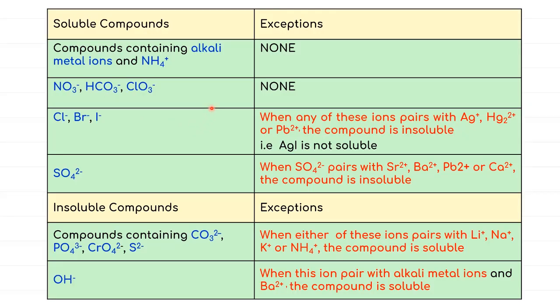This table shows the solubility rules for ionic compounds. For the first two cases of soluble compounds, there are no exceptions applied, but the later two have some exceptions. If chloride, bromide, and iodide are paired with silver, mercury, or lead ion, they become insoluble. As for sulfate ion that forms salt with strontium, barium, lead, and calcium, also considered as insoluble.